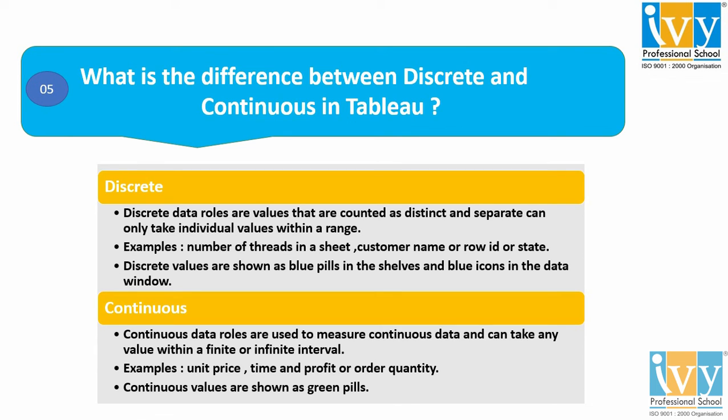Continuous data can take any value between a finite to infinite interval. For example, profit, quantity, discount, sales, price, and time — all these are examples of continuous.